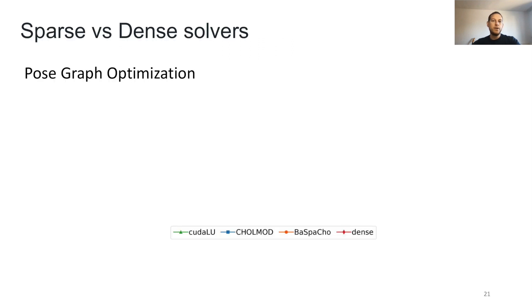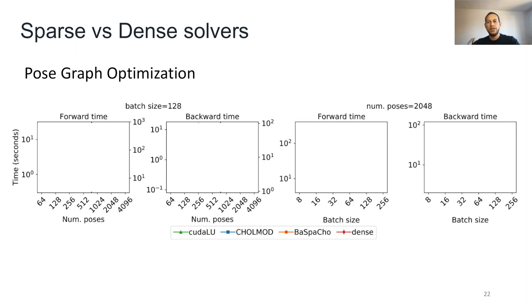On the PGO problem, we benchmark our sparse solvers, CUDLU, CHOLMOD, and BaSparseOp, against PyTorch-native Cholesky dense solver. We evaluate compute times for forward and backward paths of the Theseus layer on increasing number of poses on the left and increasing batch size on the right.